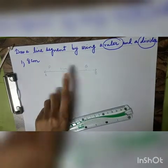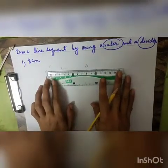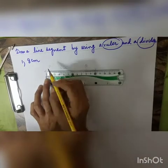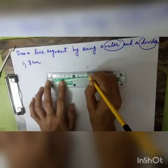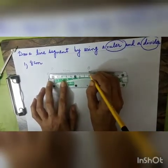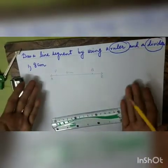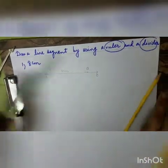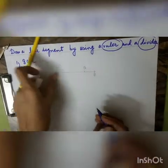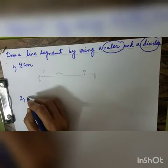This line segment PQ is 8 centimeters. Now I'm going to verify it with the ruler. You can see the first end is kept on zero and the second end is on 8 centimeters. So this is the required line segment of 8 centimeters.